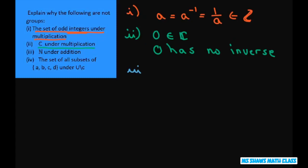Three, the natural numbers under addition. For the natural numbers, there's no inverse. The inverse of A would be negative A, but negative A does not belong to the natural numbers.